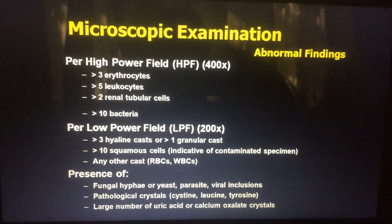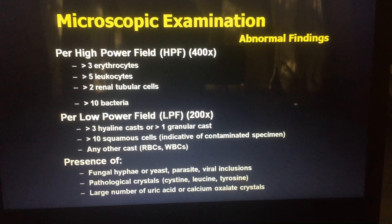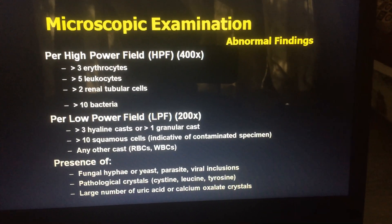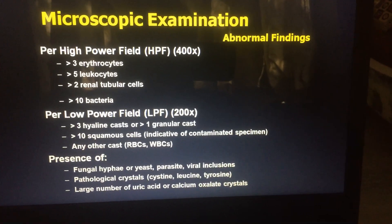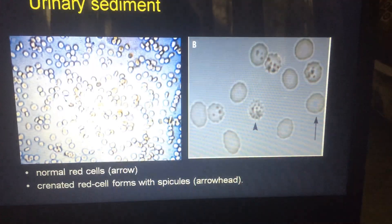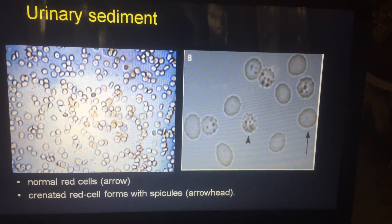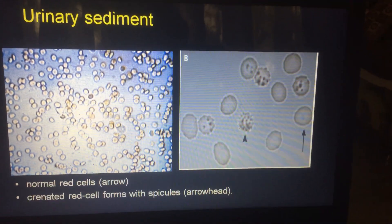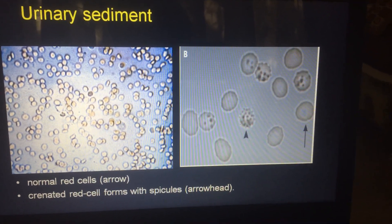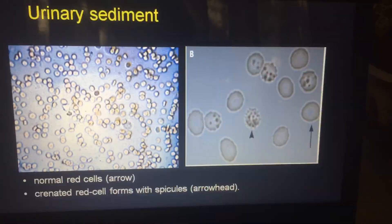In high power field microscopic examination, if there are more than 3 erythrocytes it is abnormal; more than 5 erythrocytes is also abnormal. If you get tubular cells more than 2, it is abnormal, and if there is presence of bacteria more than 10, it is considered abnormal. You can see two slides: one slide shows plenty of RBC — this is 100% abnormal and represents macroscopic hematuria. In the second slide, you can see occasional RBC with abnormal spicules, which suggests glomerular hematuria.